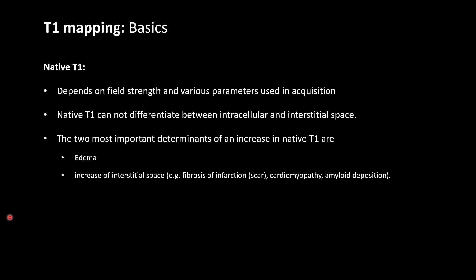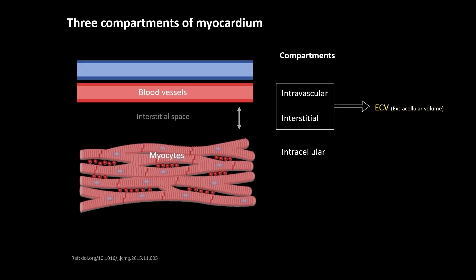In this way, native T1 is more sensitive but less specific. The two most important factors that increase native T1 value are edema and an increase of the interstitial space. There are three compartments of the myocardium: intravascular, interstitial, and intracellular. The intravascular and interstitial compartments together form the extracellular volume (ECV).